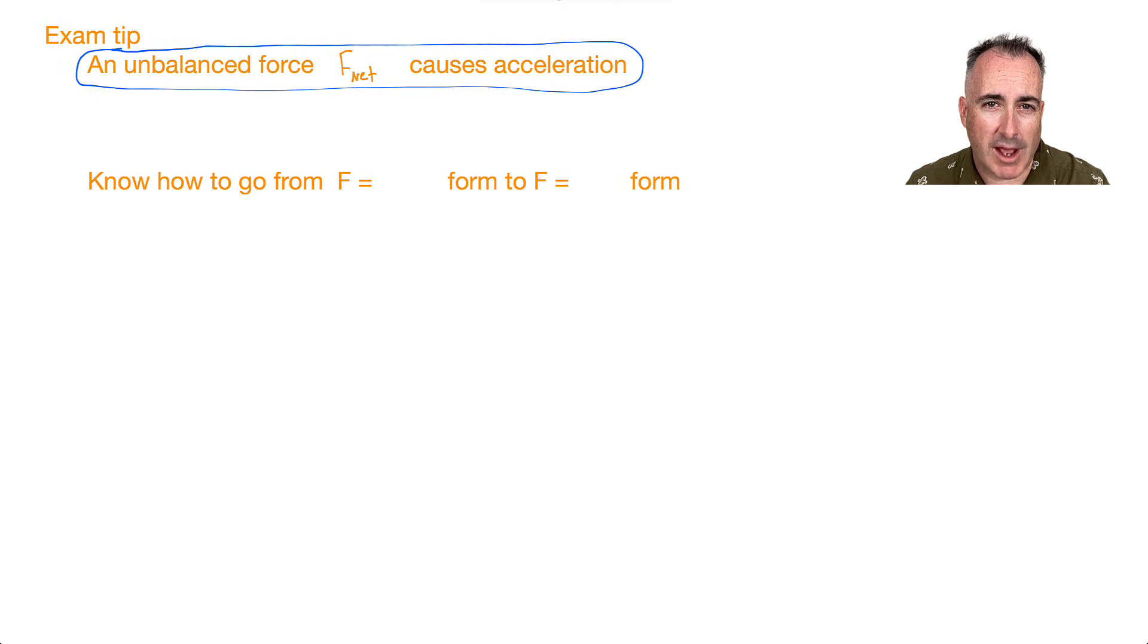And it's a really good idea to know how to go from those two different equations. So F equals delta P over delta T. It's nice to know how to get from there to this form, which is F equals MA. So how do you do that? Let me show you. So we first start off with, well, let's write it down. So delta P over delta T. What is P? Remember, P equals MV. That's the equation for momentum.